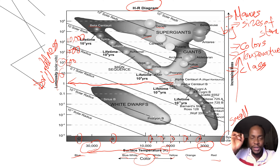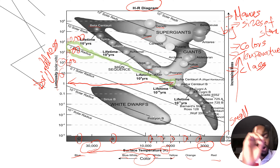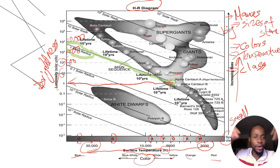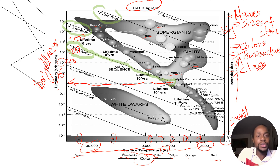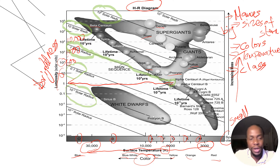This diagram also gives you the radius of a star. For example, our Sun has a solar radius of 1. If any star is bigger than our Sun, it could have a radius of 2, 10, or 100 solar radii — meaning those stars are 100 times larger than our Sun. Below the Sun's line is 0.1 solar radius, then 10 to the power of negative 2, and so on — telling you those stars are way smaller than our Sun.